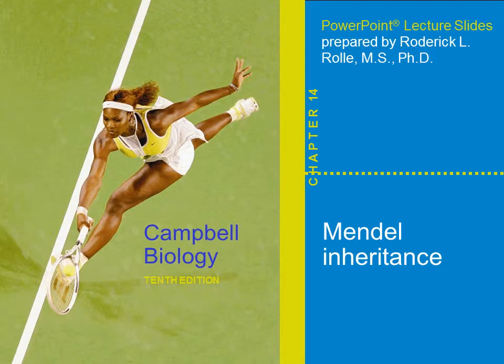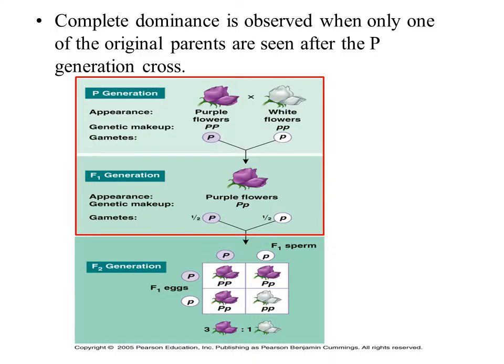Hello, my name is Dr. Roderick L. Rohl and today I will be talking to you about Mendelian inheritance. Complete dominance is observed when only one of the original parents are seen after the P generation cross. In this image we have the parental purple flower being crossed with a parental white flower. The immediate offspring is the F1 generation and we no longer see the white flower. This is an example of complete dominance.